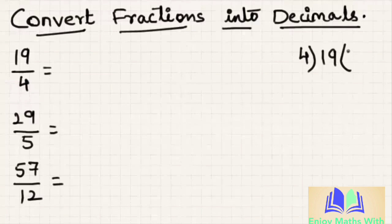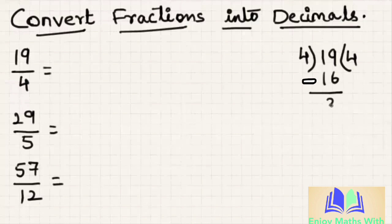Let us divide 19 by 4. 4 goes 4 times to give 16. 19 minus 16, we get 3. As 3 is not divisible by 4, we place a decimal point here and write 0.